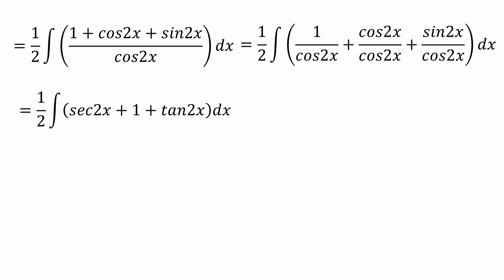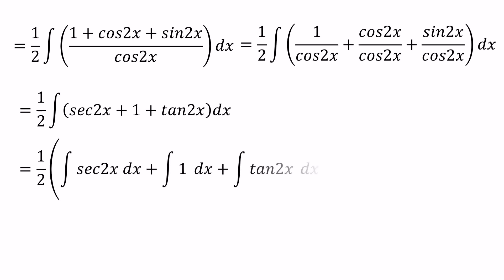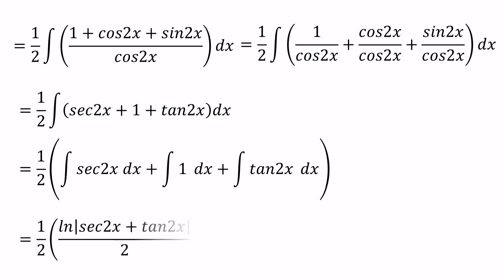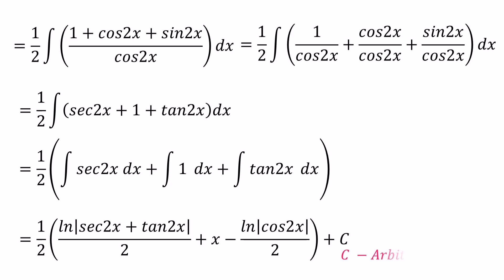Now we can compute each integration separately. We write half times the integral of sec 2x, plus the integral of 1, plus the integral of tan 2x. The integral of sec 2x equals ln|sec 2x plus tan 2x| over 2. The integral of 1 equals x. The integral of tan 2x equals minus ln|cos 2x| over 2. Finally, we should add an arbitrary constant.